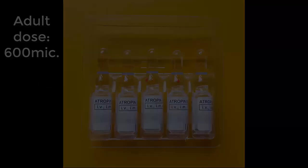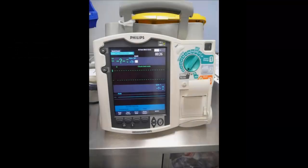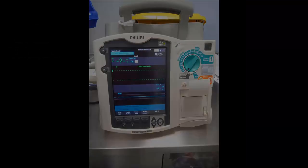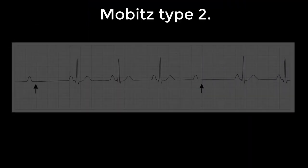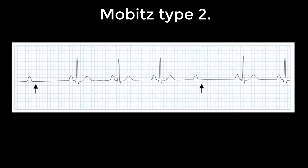But occasionally a patient may present bradycardic with lightheadedness and require some IV atropine. Very rarely, the patient with Mobitz type one — again, Wenckebach — requires a pacemaker.